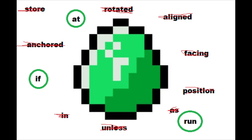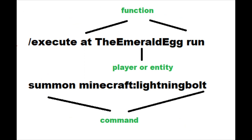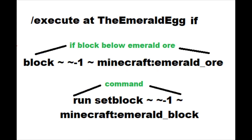In many execute commands, the first step is to use 'at' to define where the command will be happening. For example: execute at the emerald egg, then run summon lightning bolt. This will summon a lightning bolt at the emerald egg — without the 'at' part, it would summon the lightning bolt where the command was run.